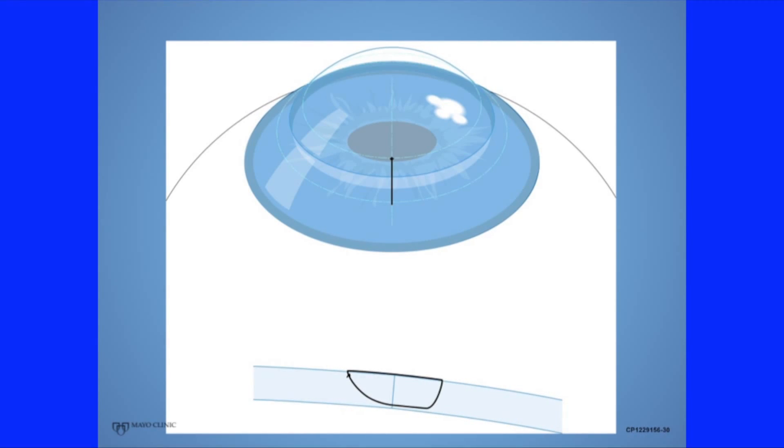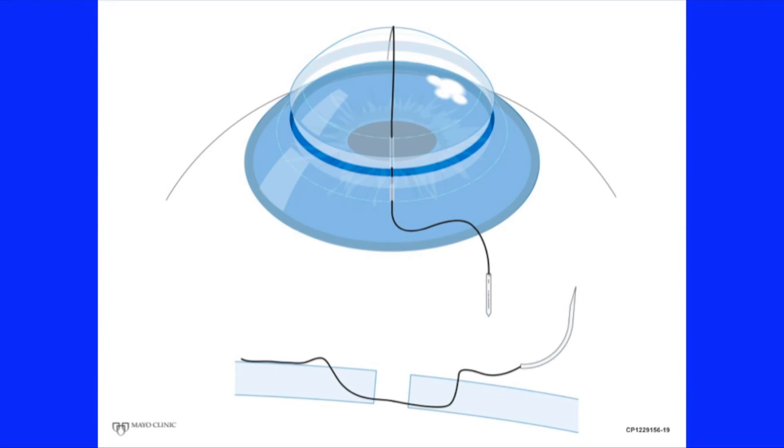We want that proper compression to occur as soon as the first throw of the knot is complete. The second and final throws will lock it in permanently. So how do we do that?